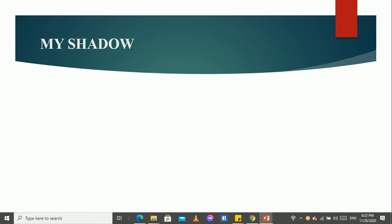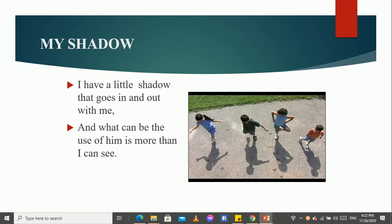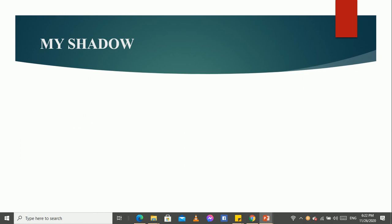So, children, now read the poem with me. My shadow. I have a little shadow that goes in and out with me. And what can be the use of him is more than I can see. So, here, the shadow I have, everybody has a shadow. And what it does, it goes with us. And what we can do with the shadow is that we can see it.